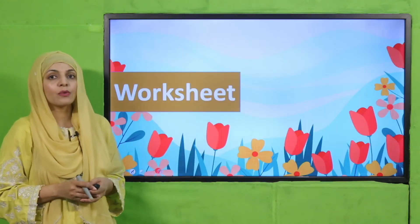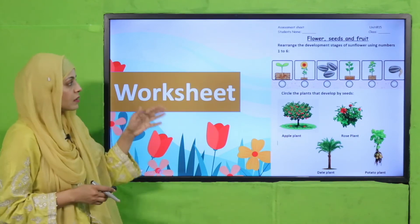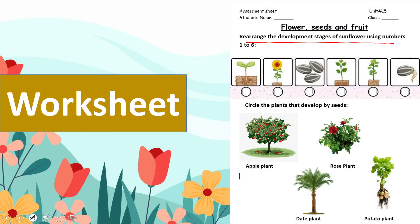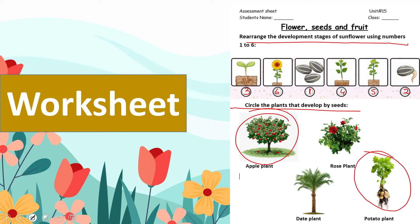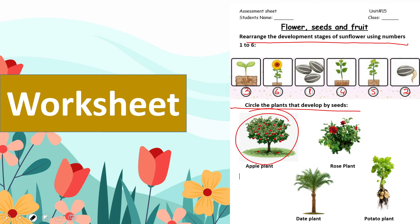For practice, you can download this worksheet from the description box below this video, or get it in print from your teacher. Write your name and class, then start the worksheet. Rearrange the development stages of the sunflower using numbers — arrange the jumbled pictures in order. Also, circle the plant that developed by seeds: apple develops by seeds, while potatoes do not have seeds and develop as part of the plant.